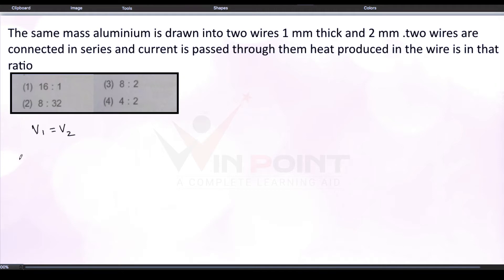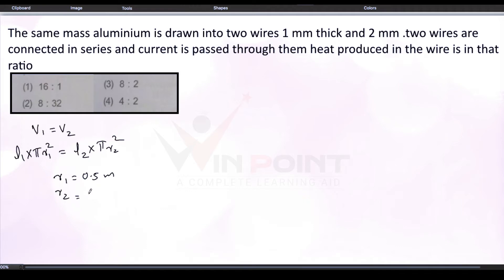For V1, we multiply length and area: L1 into pi R1 squared, because we need to consider the cross-sectional area. Similarly, V2 equals L2 into pi R2 squared. The thickness is 1 millimeter, so R1 is half of that — 0.5 millimeter. R2 corresponds to 2 millimeter thickness, so R2 is 1 millimeter. We substitute those values and cancel pi from both sides, giving us L1 into 0.5 squared equal to L2 into 1 squared.